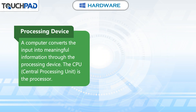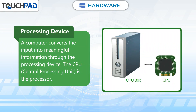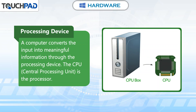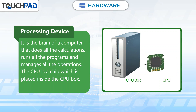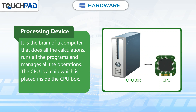Processing device. A computer converts the input into meaningful information through the processing device. The CPU, central processing unit, is the processor. It is the brain of a computer that does all the calculations, runs all the programs and manages all the operations. The CPU is a chip which is placed inside the CPU box.